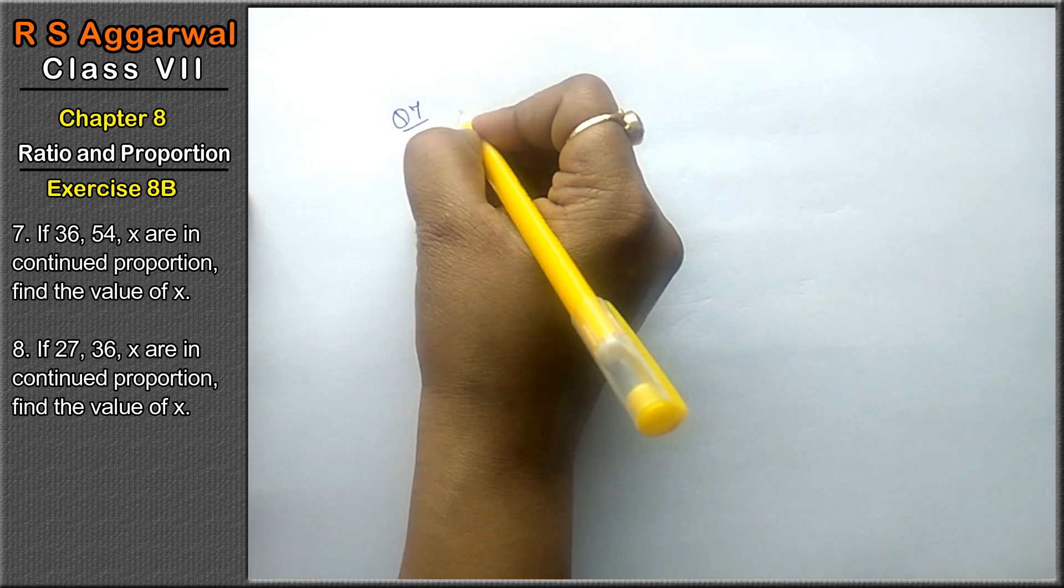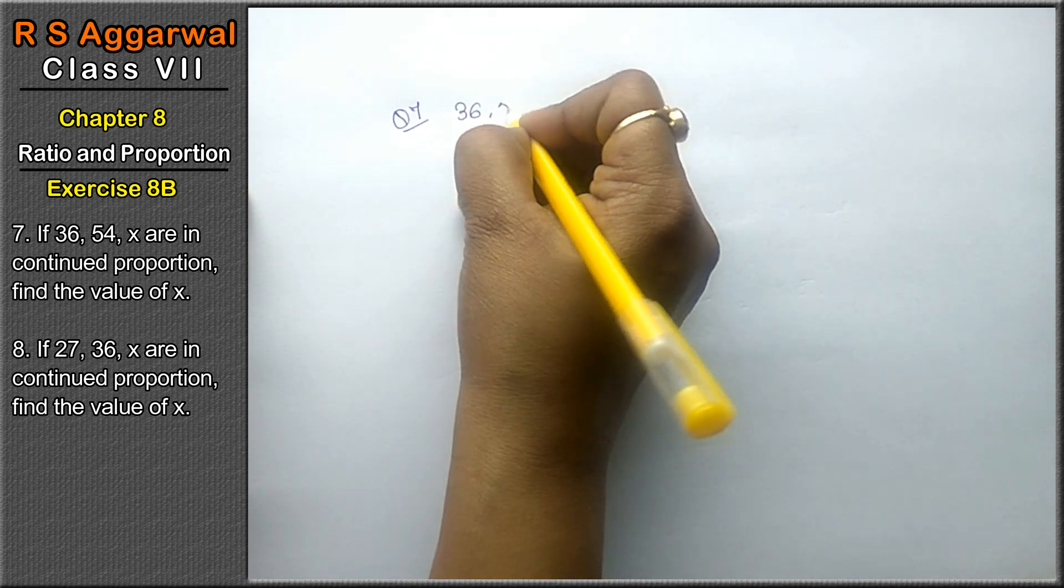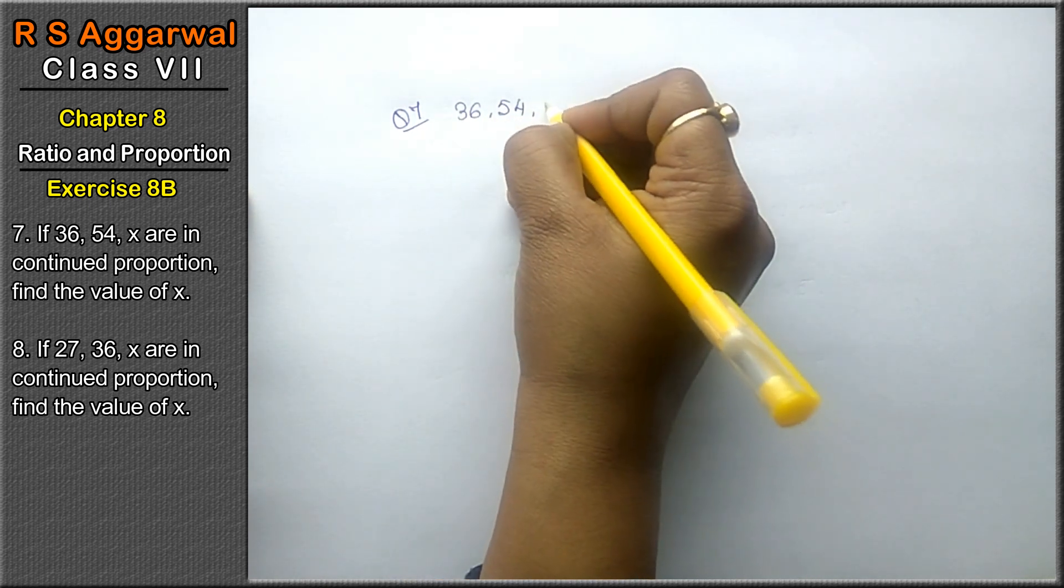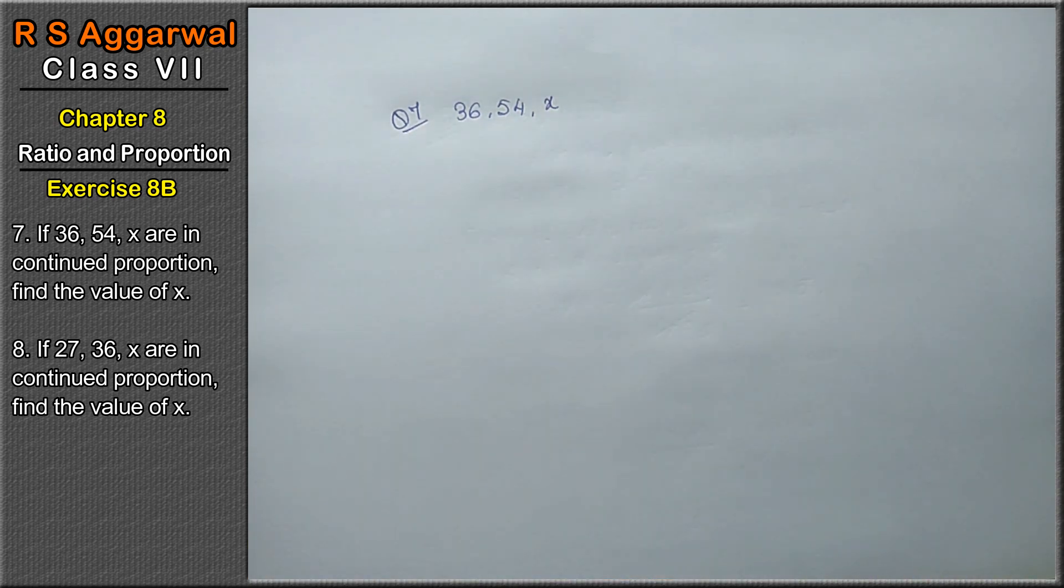If 36, 54 and x are in continued proportion, find the value of x.